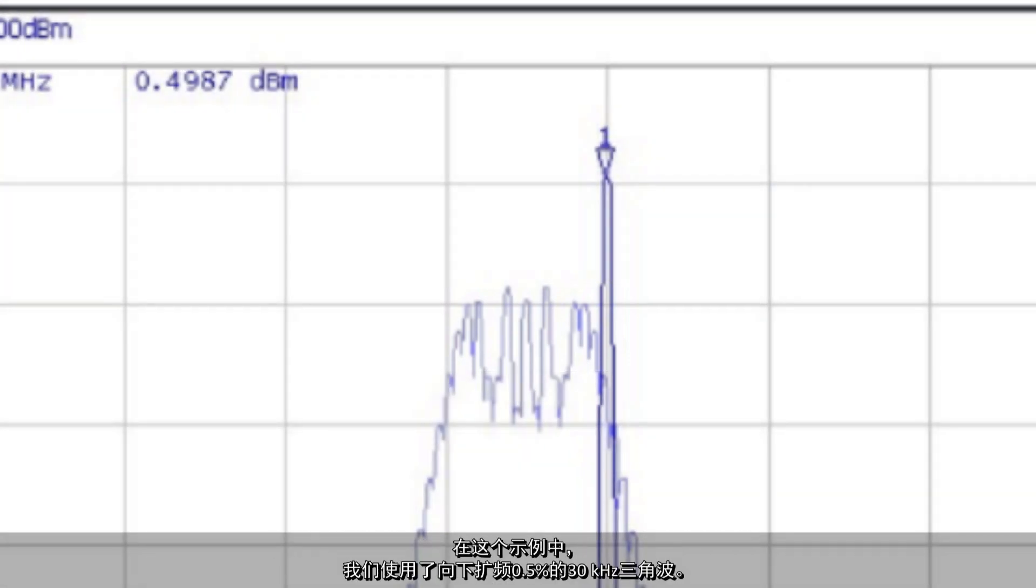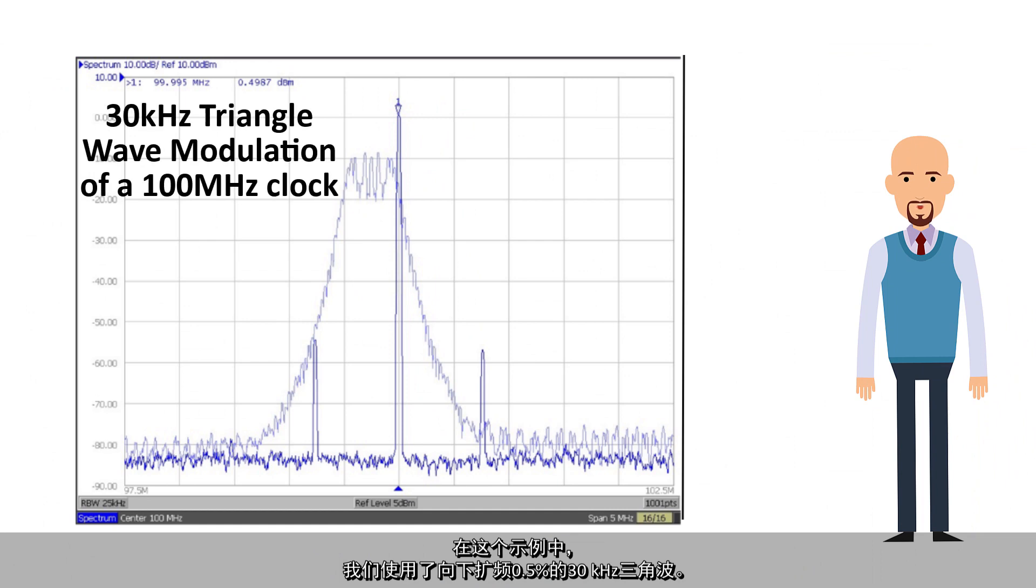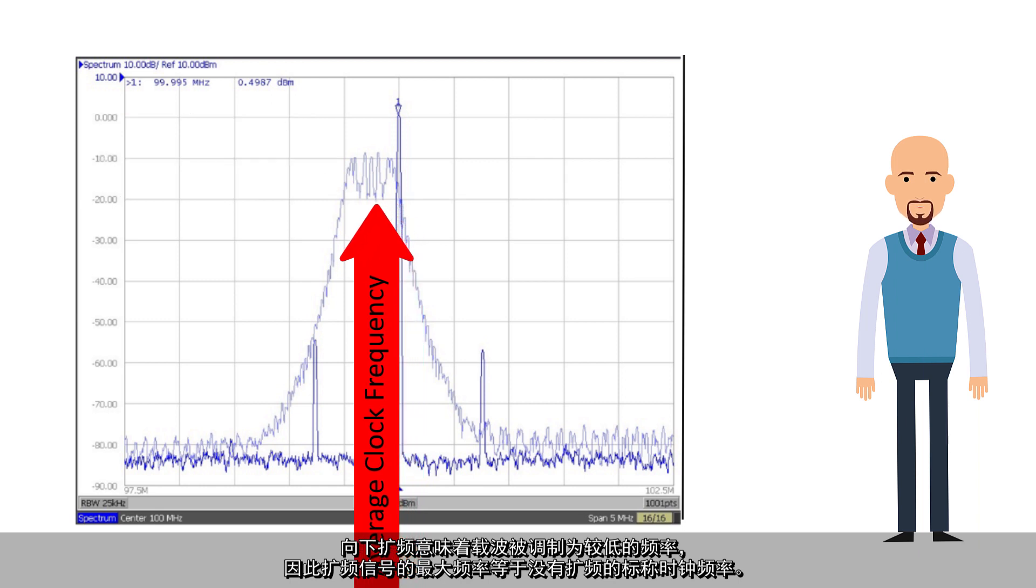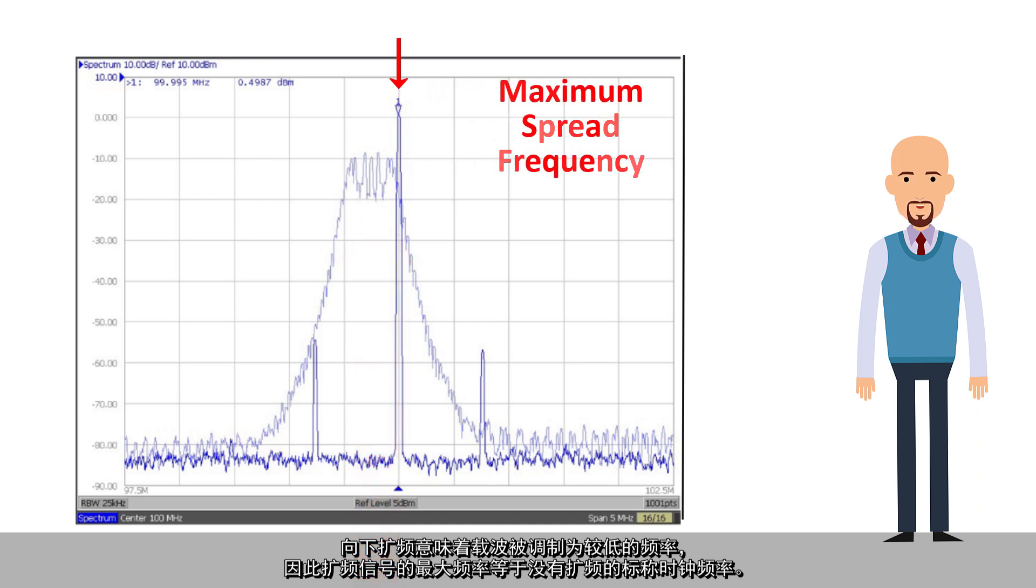In this example, a 30 kHz triangle wave with 0.5% down spread is used. The term down spread implies that the carrier is modulated to lower frequencies so that the maximum frequency of the spread spectrum signals equals the nominal clock frequency without spread.